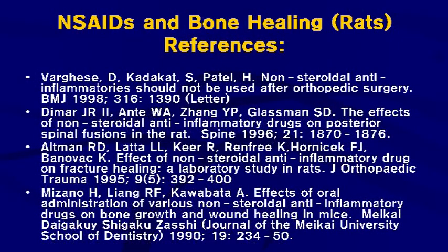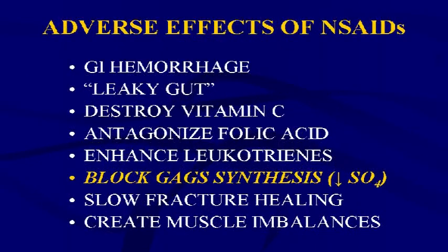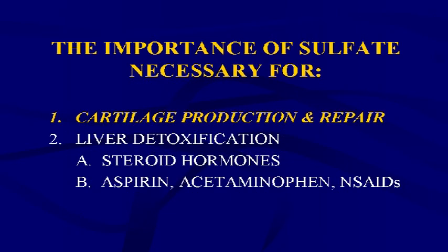These studies are in animals, but the same is presumably true in patients and studies are ongoing. References are from 1998, 1996, 1995, and 1990, all in rats, demonstrating adverse effects of NSAIDs on bone healing. NSAIDs also block GAG synthesis by dramatically decreasing availability of sulfate, which interferes with GAG synthesis and healing. This was shown in 1990 and 1992 references, believed to also be true in humans.